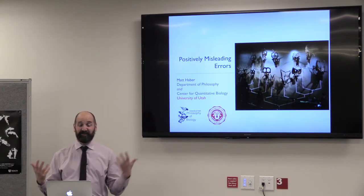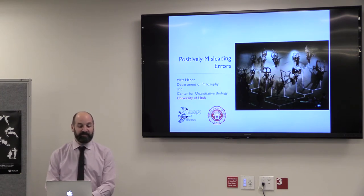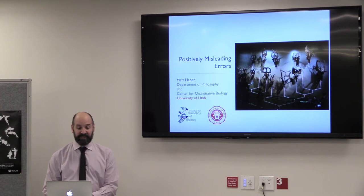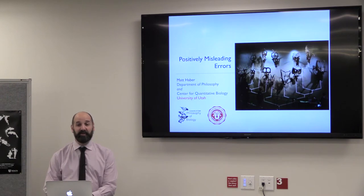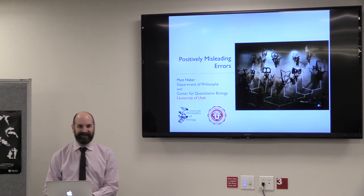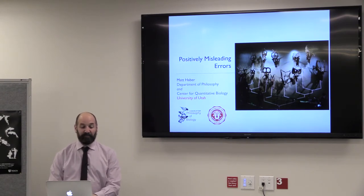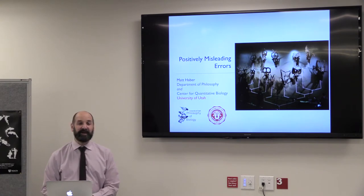My research, before I get into the talk, is in part on how to do good science — that might be a way to think about what philosophers of science do. More specifically, I look at how we make good inferences when faced with lots of data. The area I look at is evolutionary biology. I'm going to show you an example where it looks like everything's gone well, but in fact everything's gone really badly. These are called positively misleading errors, and I suspect they are widespread.